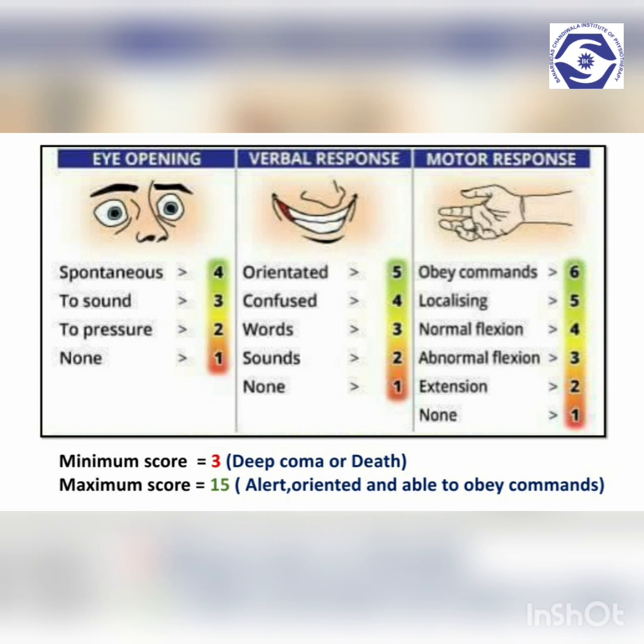Different levels of responses for each parameter are recorded as a numerical score. The individual scores are summed up to give an overall score. In the case of eye opening, the best response scores a 4; the best verbal response scores a 5; and the best motor response scores a 6. Therefore, 15 is the maximum possible score and 3 is the minimum possible score.